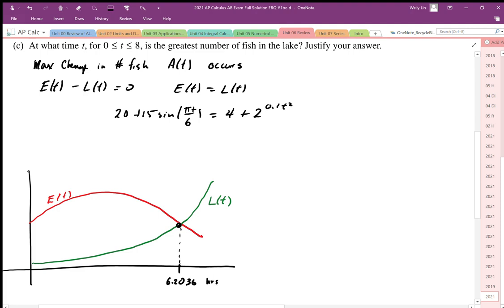Now we can justify this answer by saying that the max accumulation of fish occurs when A'(t) is equal to zero, and that's when E(t) equals L(t). We've already talked about that.